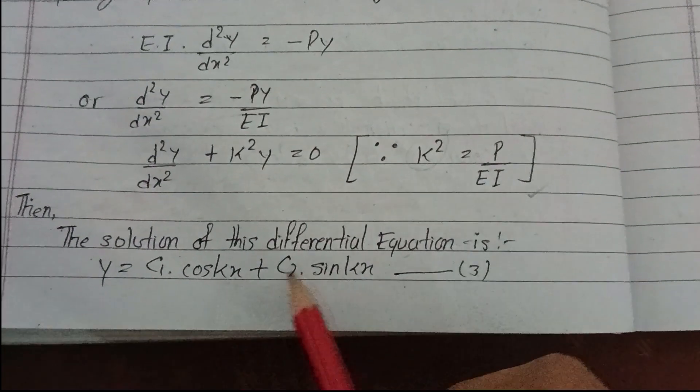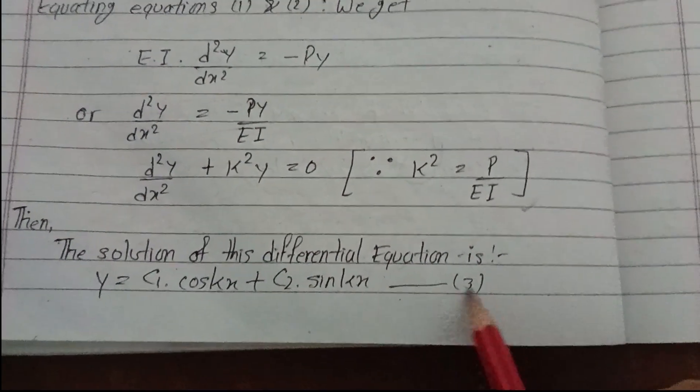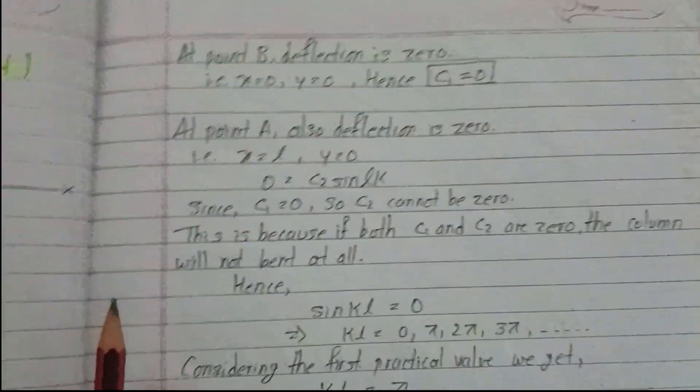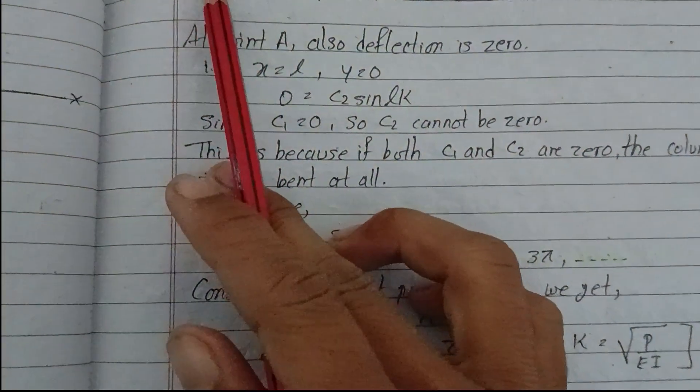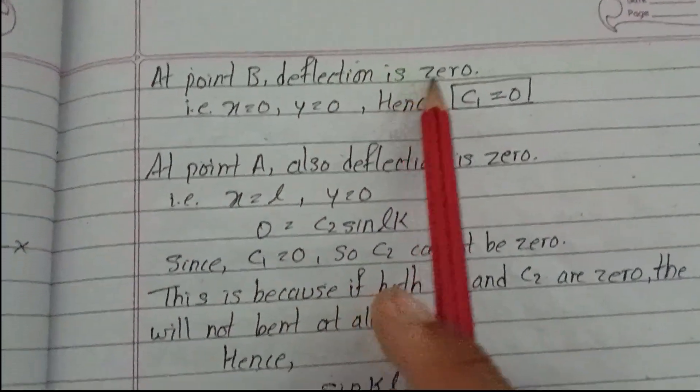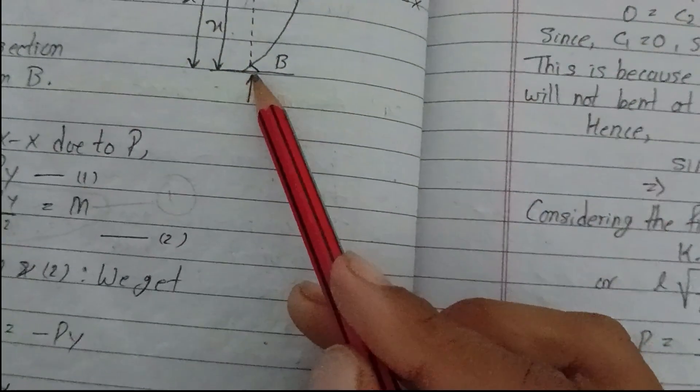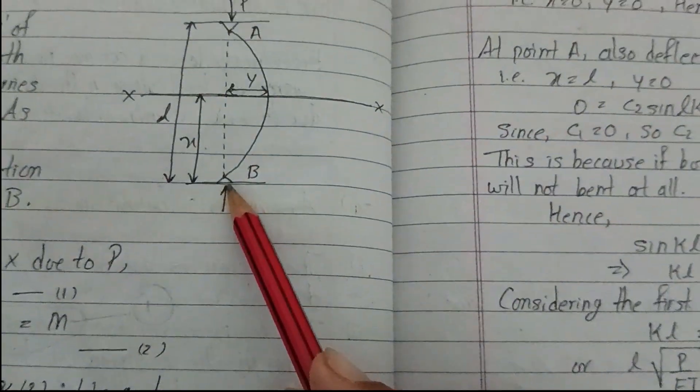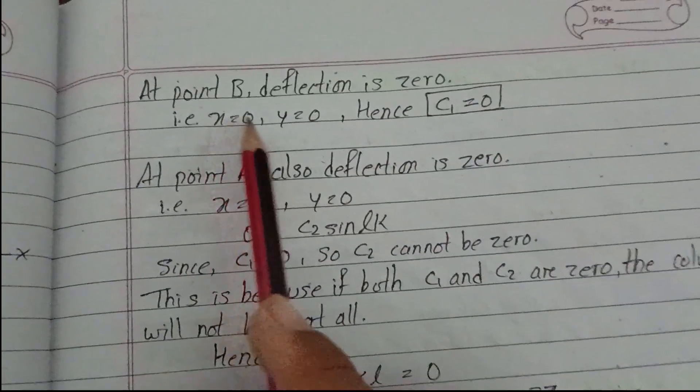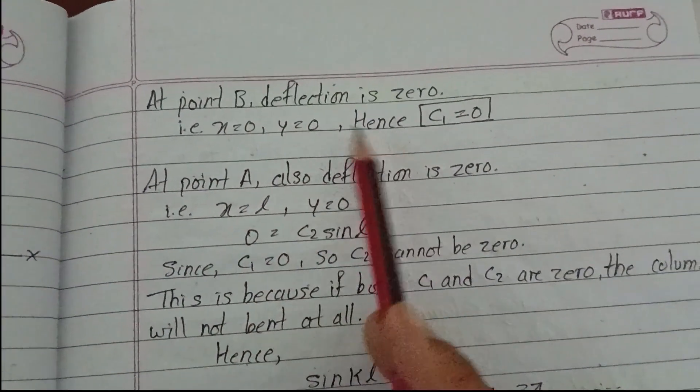The solution of this differential equation is y equals C₁ cos(kx) plus C₂ sin(kx). At point B, the deflection is zero. When x equals zero, y equals zero, which gives C₁ equals zero.